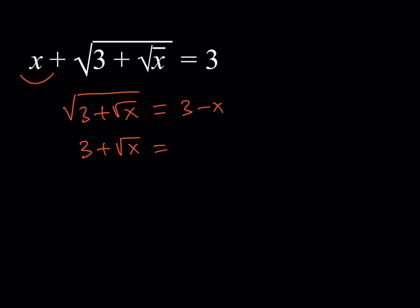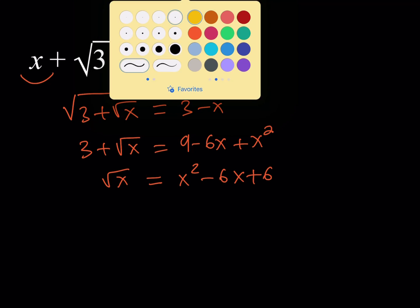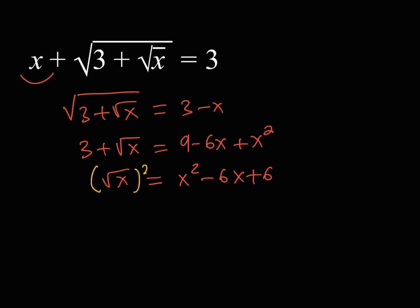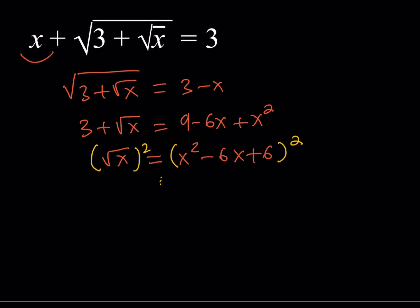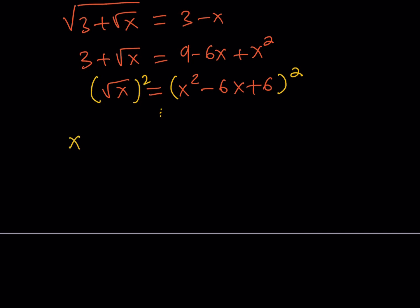So this should give you 3 minus x quantity squared, which is 9 minus 6x plus x squared. Then you can arrange this a little bit, and that's going to give you square root of x is equal to x squared minus 6x plus 6. And then of course, you can square both sides one more time, and then when you do, you're going to get rid of all the radicals, and you're going to get a quartic equation. To keep a long story short, I'm going to give you what that equation is, and that's going to be x to the 4th power minus 12x to the 3rd power plus 44x squared minus 49x plus 16 is equal to 0.